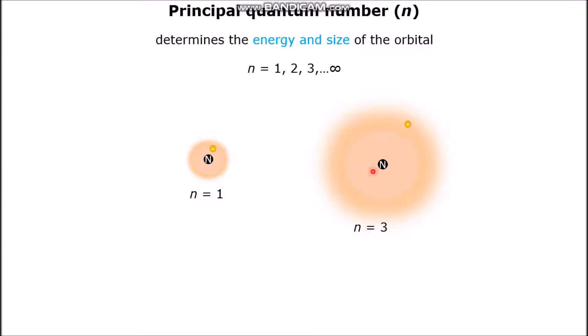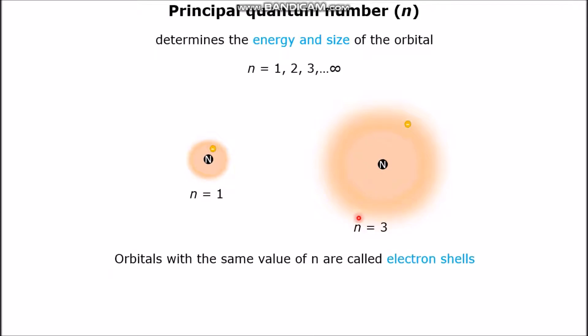As the value of N keeps getting larger, the electron keeps getting farther and farther away from the nucleus of the atom. Another side note here is that orbitals with the same value of N are called electron shells or electron levels.